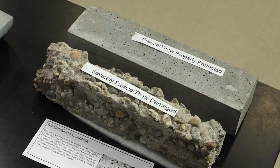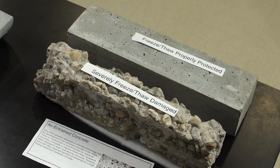As you can see here, the top sample has been air entrained and is still an intact sample. The bottom sample has not been air entrained, and they've both been through the same number of freeze-thaw cycles. You can see what freeze-thaw damage can do to those samples if you don't air entrain the concrete. GCP makes a lot of different air entraining admixtures to get those bubbles in there to prevent freeze-thaw damage from occurring.